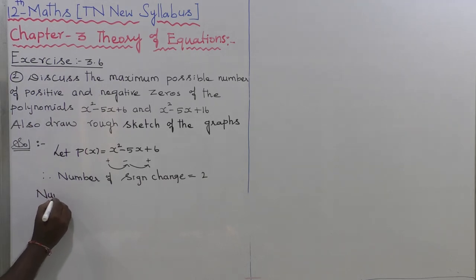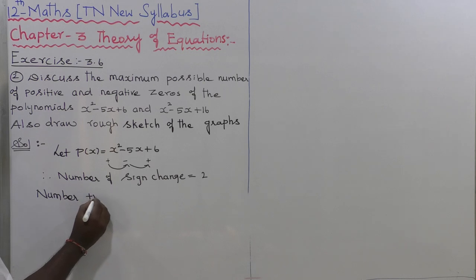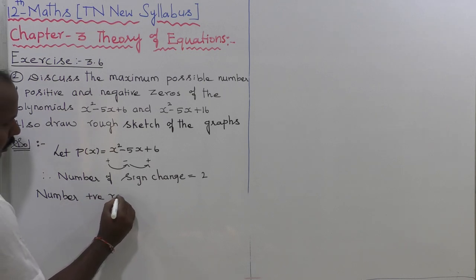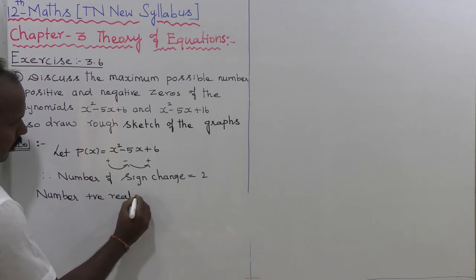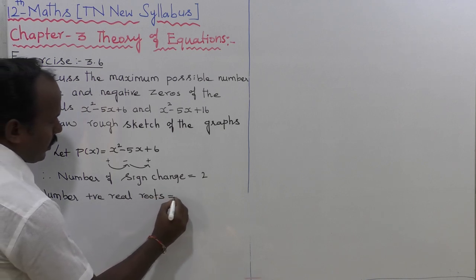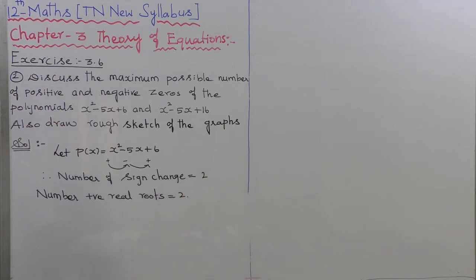Therefore, the number of positive real roots is equal to 2.